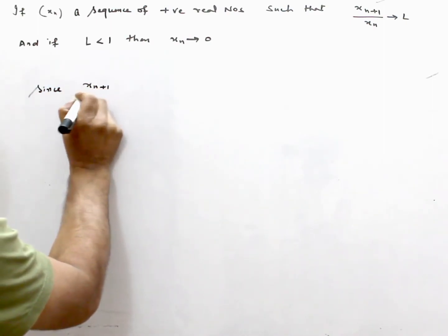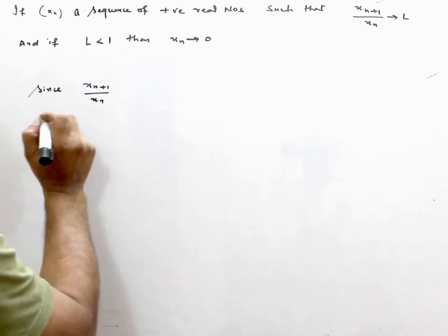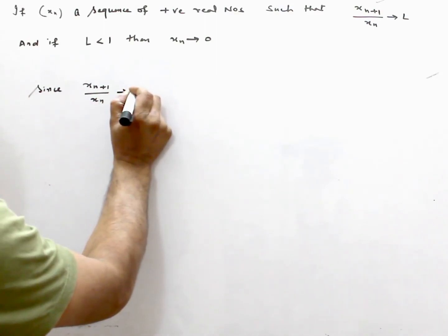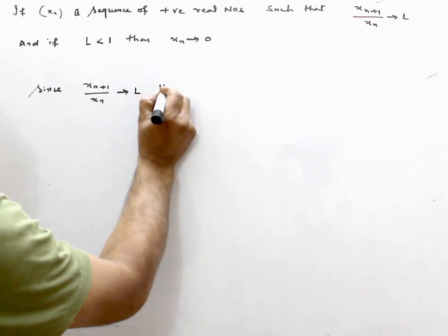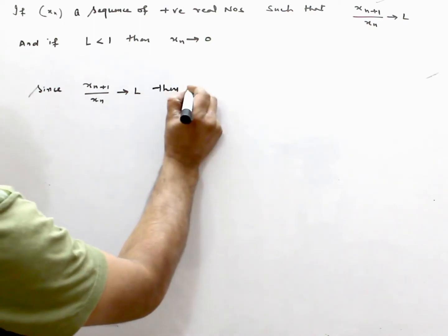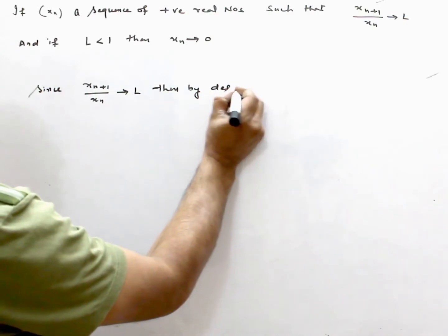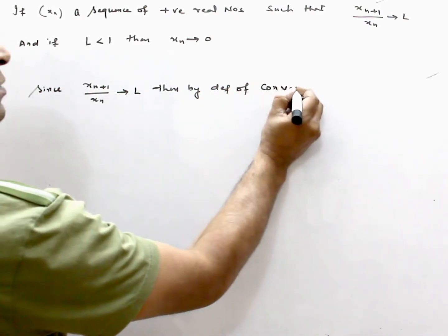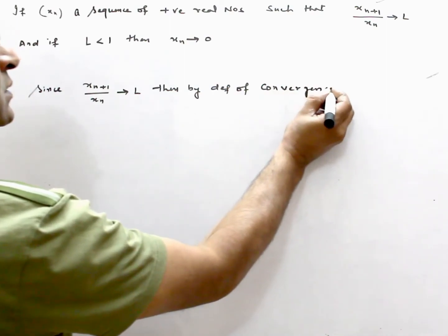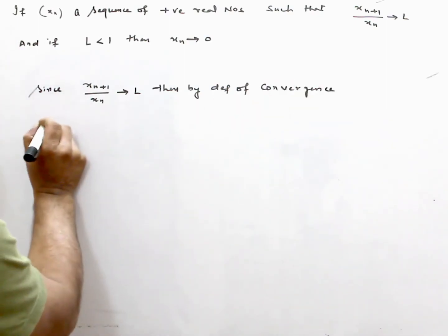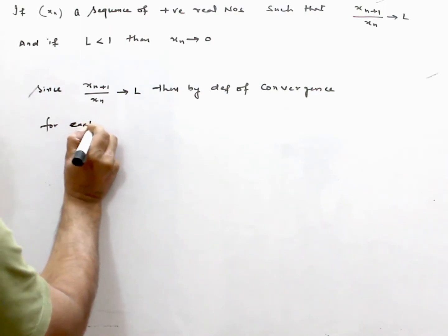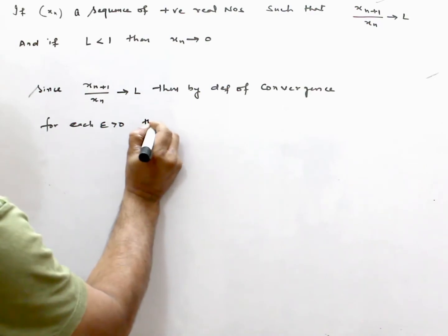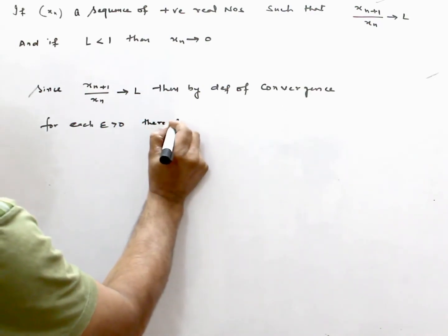Since xₙ₊₁ divided by xₙ converges to L, then by definition of convergence, for each epsilon positive, there exists N such that the absolute value condition holds.